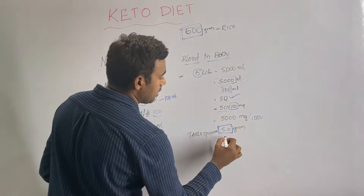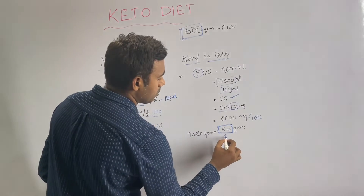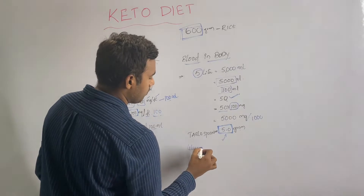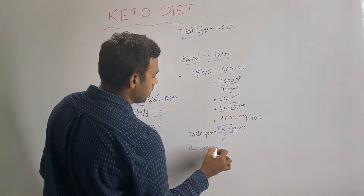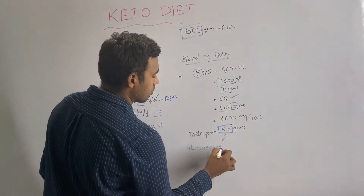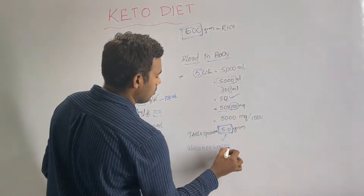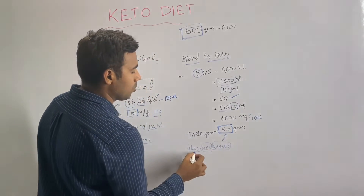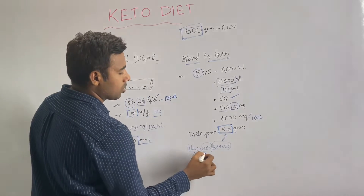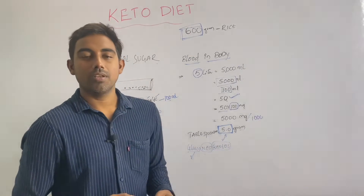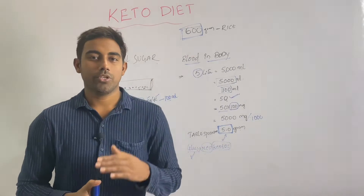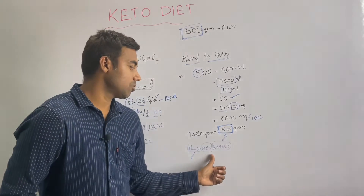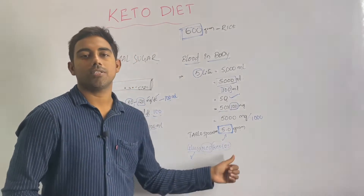But if you don't consume sugar from food, your body has a process called gluconeogenesis, where your body produces its own sugar and maintains correct levels.